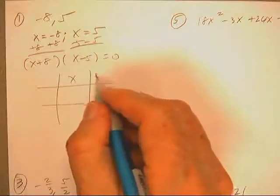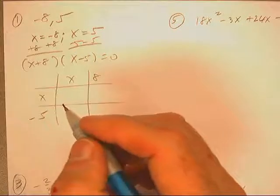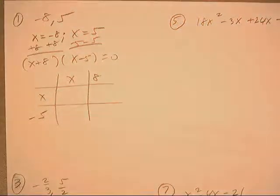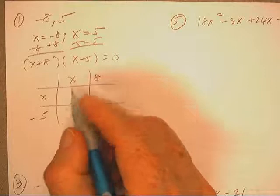Throw these two in a tic-tac-toe. x and 8 and x negative 5. And after you get them thrown in there, what you'll want to do is just a little multiplication chart.